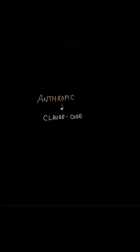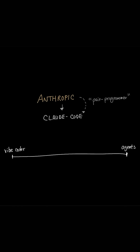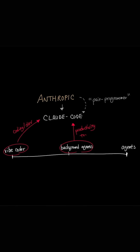Anthropic markets CloudCode as a pair programmer, but the features they included in CloudCode simply extend all the way beyond programming. On one extreme, some people may use CloudCode as a vibe-coding tool where CloudCode takes the driver's seat in coding, while others may use CloudCode as a background agent that performs system maintenance and administration tasks. And on the other extreme, CloudCode is being utilized as a full-on agent.